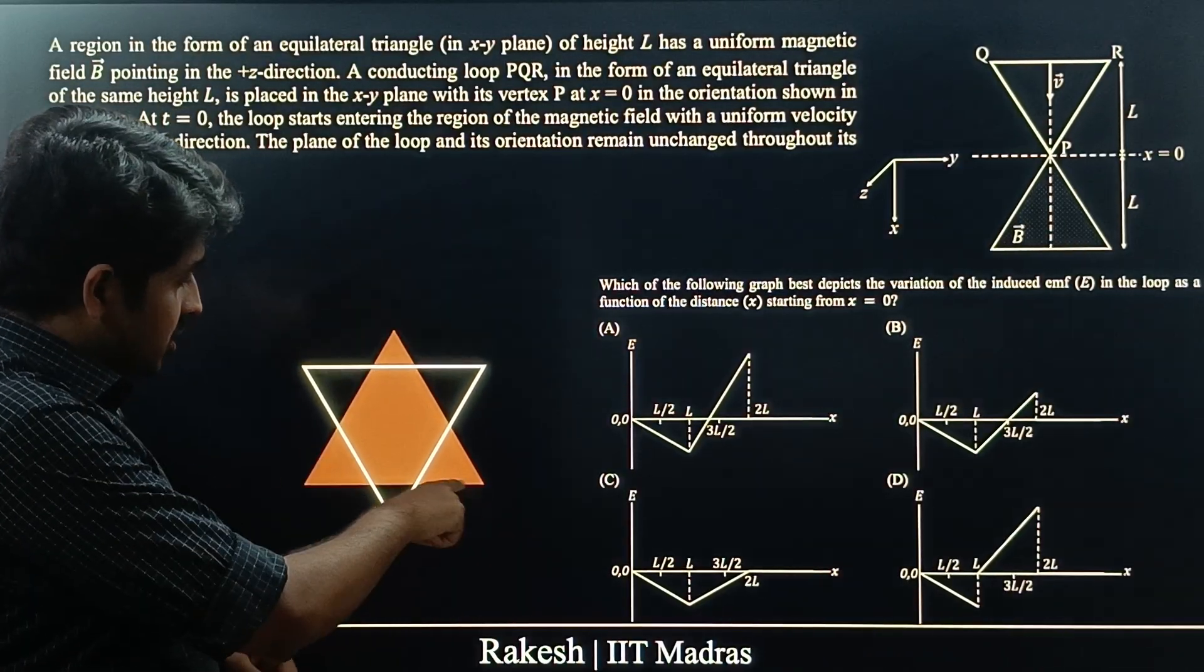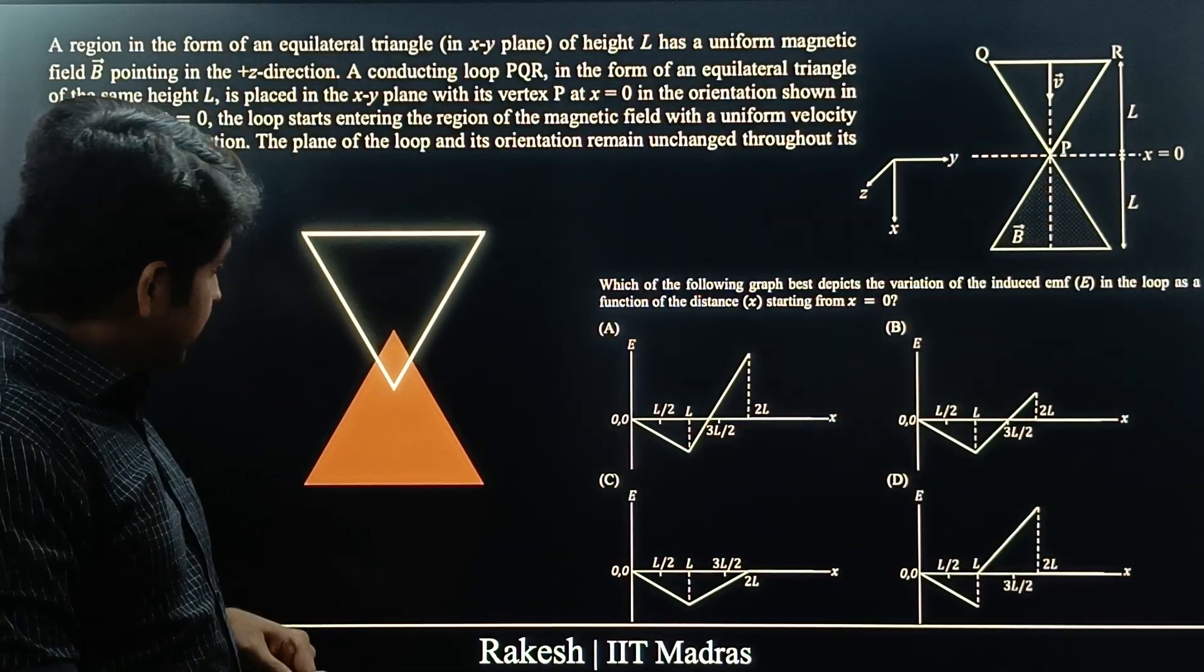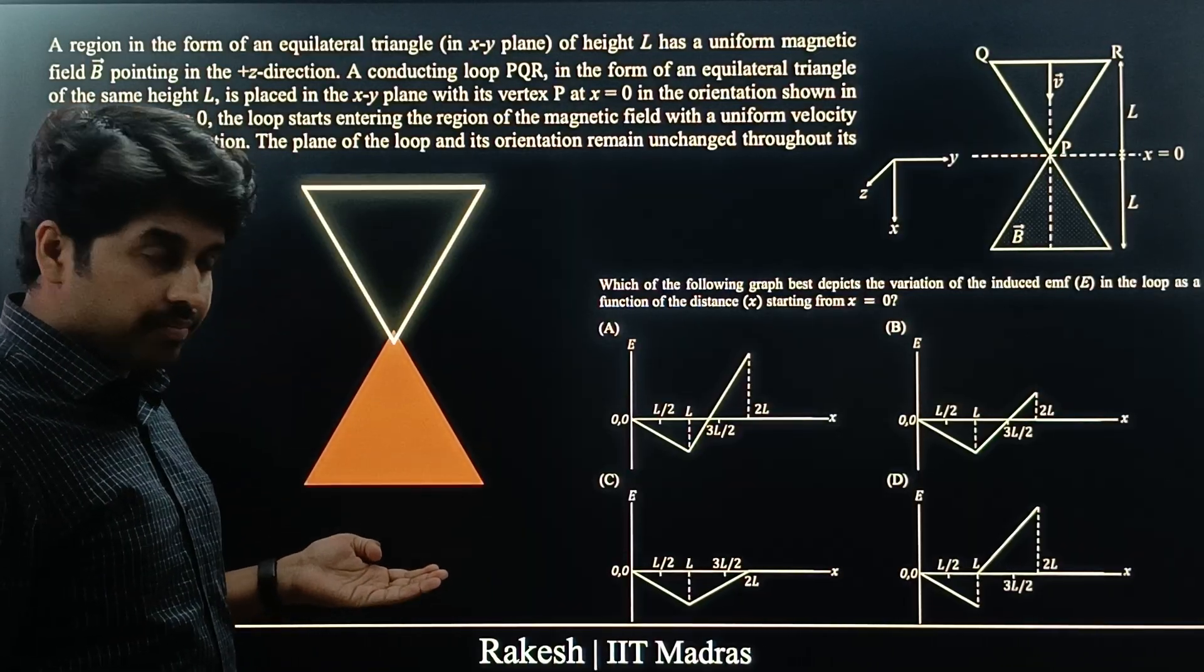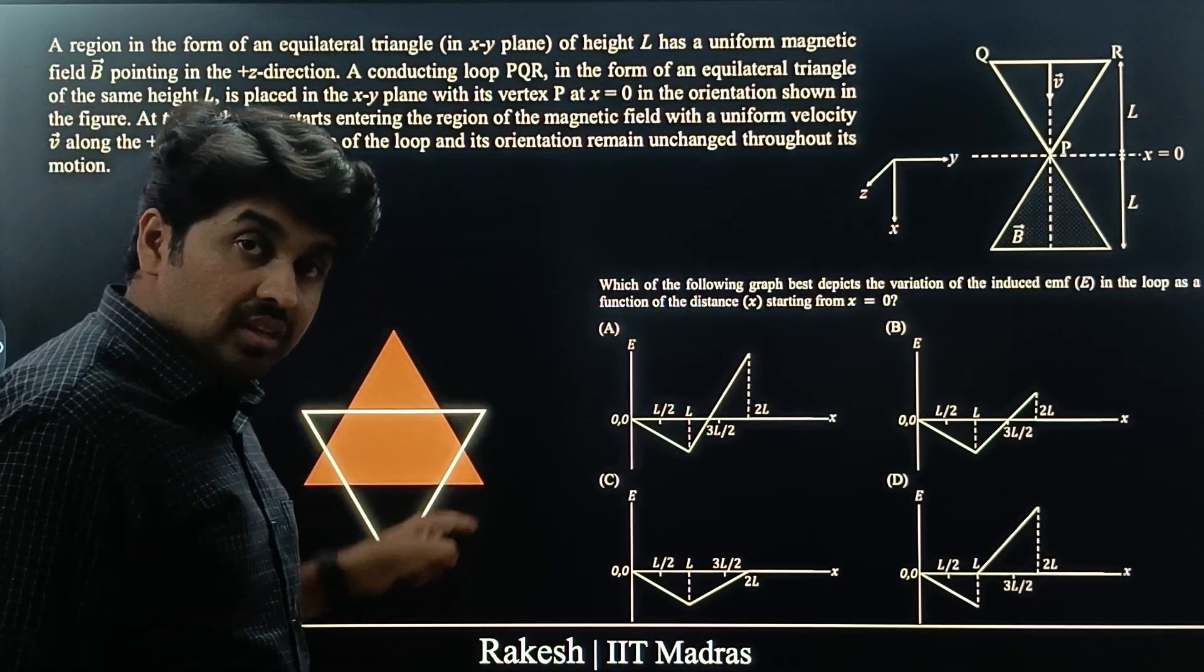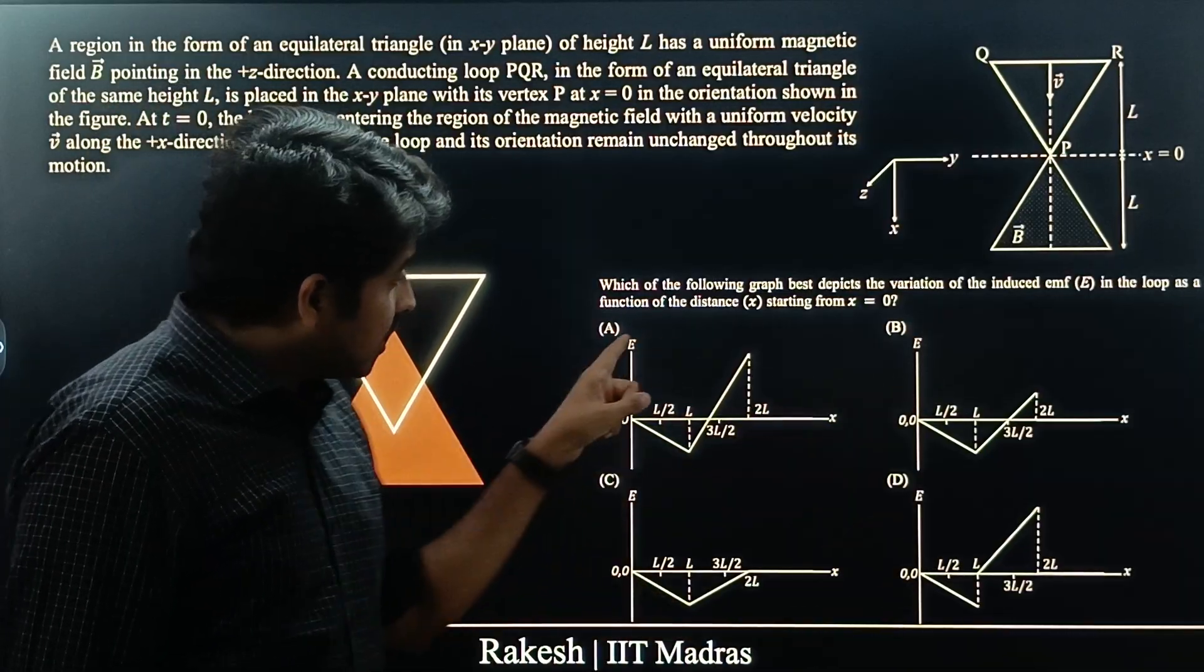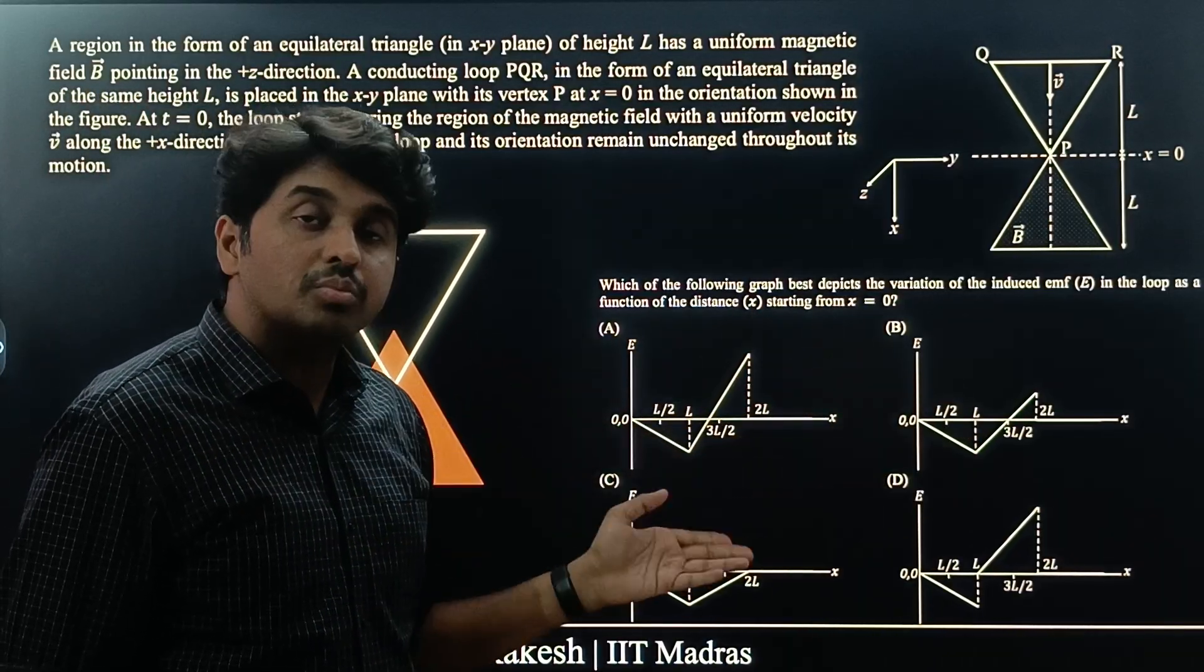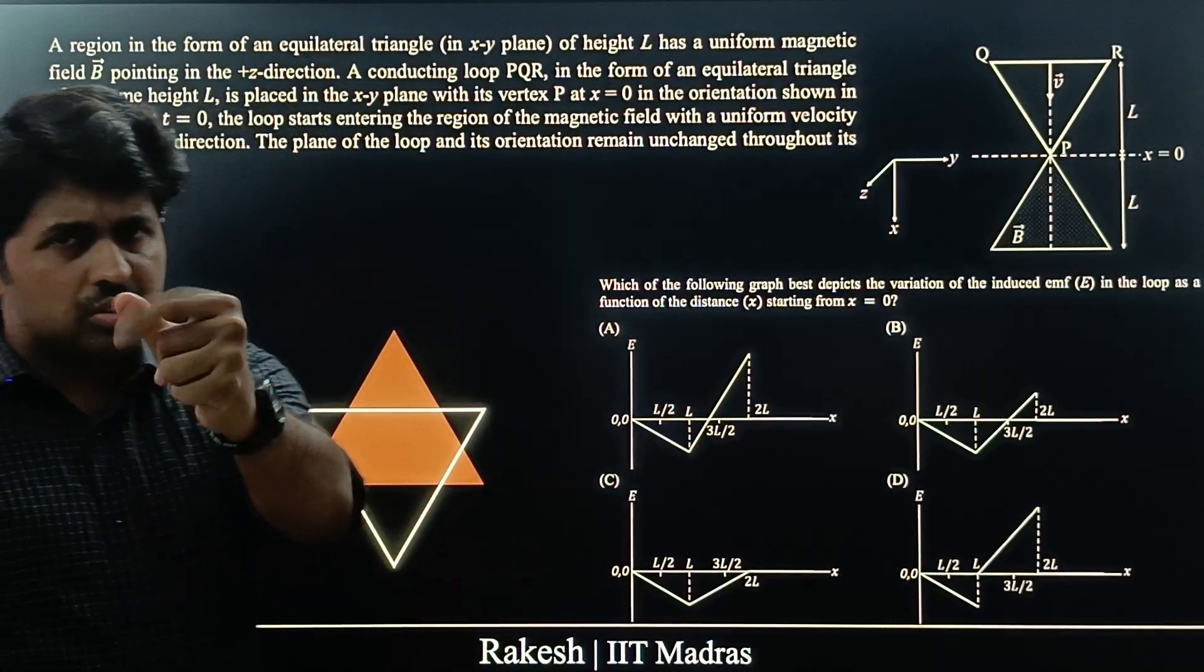There is this orange equilateral region of magnetic field. The magnetic field is pointing outward. There is an equilateral triangle wire which is moving like this with constant velocity. As it moves from here to here, the EMF induced in this triangular wire is given by these graphs. The EMF induced as a function of x. x is measured from here. Which of these options is correct? That is what he is asking in this question.